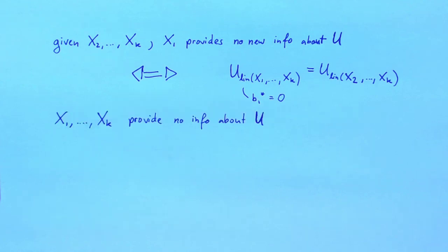If none of the axes provide any information about u, then the best linear prediction will be the constant function that always predicts the unconditional expectation.